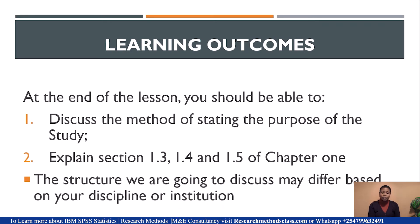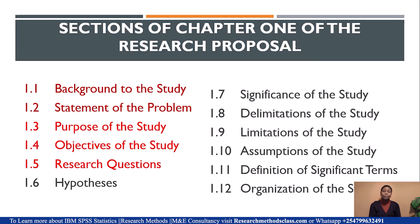At the end of this lesson, you should be able to discuss the method of stating the purpose of the study, and explain sections 1.3, 1.4, and 1.5 of Chapter 1 of the research proposal. We shall keep repeating that the structure we are discussing may differ based on your discipline and your institution. We have listed the 12 sections of the research proposal and discussed the first two in our previous lesson, so today we are discussing the three highlighted sections.